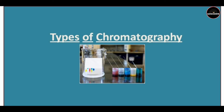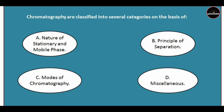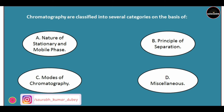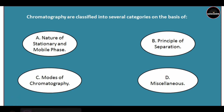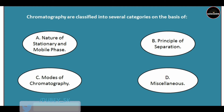Chromatography is classified into several categories on the basis of: first, nature of stationary and mobile phase; second, principle of separation; third, modes of chromatography; and fourth, miscellaneous. Let's discuss all of them one by one.